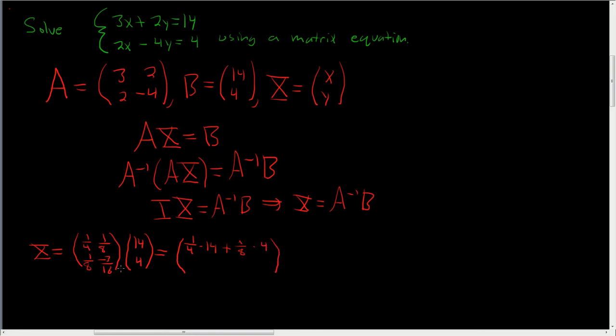To get the second entry, we do 1/8 times 14, plus negative 3/16 times 4.